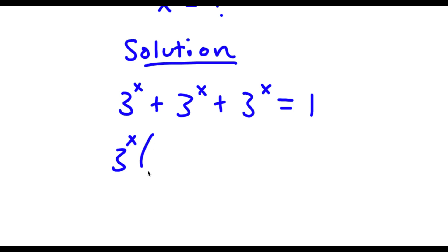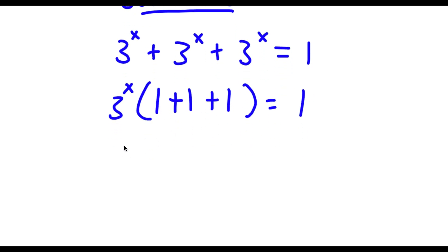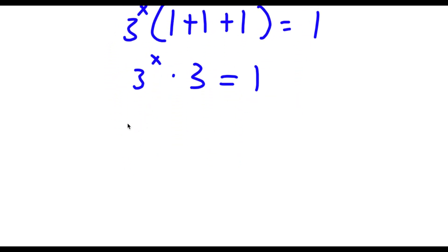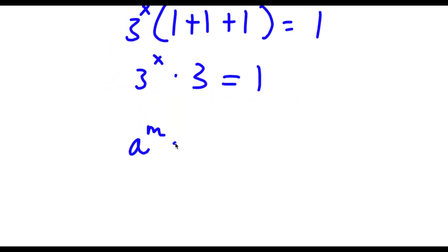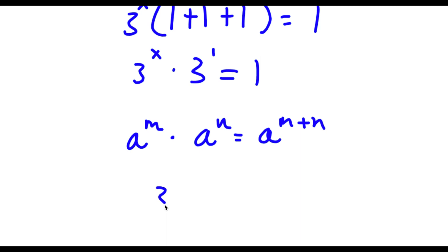So now I have 3 to the power of x times (1 + 1 + 1) is equal to 1. Simplifying inside the parentheses gives 3 to the power of x times 3 equals 1. Now using the rule a^m times a^n equals a^(m+n), I can write 3 as 3 to the power of 1, so this becomes 3 to the power of (x + 1) equals 1.